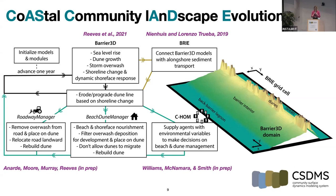At the heart of Cascade is Barrier 3D, a quasi-3D exploratory model of barrier evolution developed by Ian Reeves at UNC Chapel Hill. This model simulates the effects of sea level rise, dune growth, storm overwash, shoreline change, and a dynamic shore-based response on barrier evolution over decades. Barrier 3D is coupled with BRIE, the barrier inlet environment model, developed by Jaap Nienhuis and Jorge Lorenzo-Trueba. We use BRIE specifically for longshore sediment transport to connect our individual Barrier 3D models. That's our natural barrier coupled model framework — the top loop.